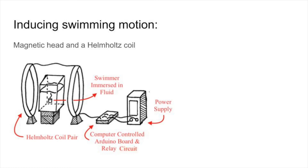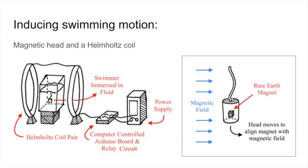In order to visualize this, we designed and implemented an experiment in which we immersed magnetic swimmers in a time-oscillating magnetic field. This magnetic field was generated using a power supply, Arduino board, relay circuit, and a Helmholtz coil pair. With a rare earth magnet placed inside the swimmer's head, we were able to reproduce swimming motion comparable to that of microorganisms as the head moves back and forth to align with the oscillating magnetic field.